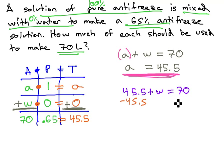Subtracting 45.5 from both sides of the equation tells us that w, or the amount of water we need, is 24.5.